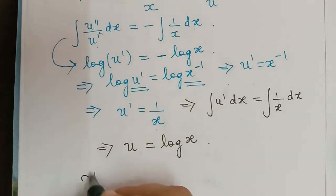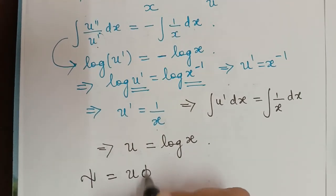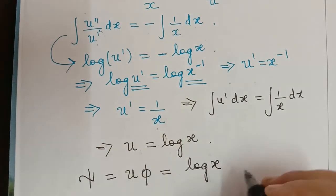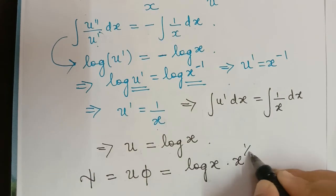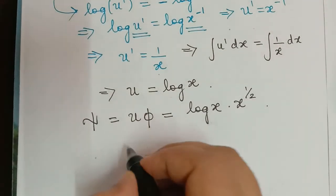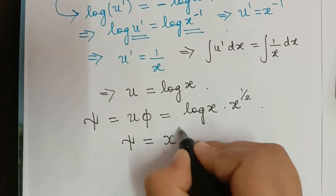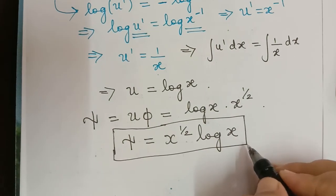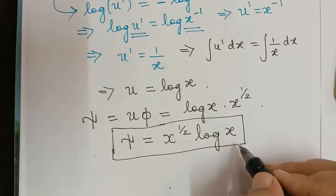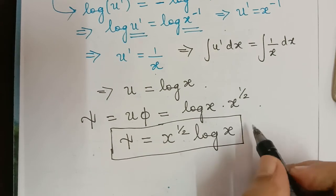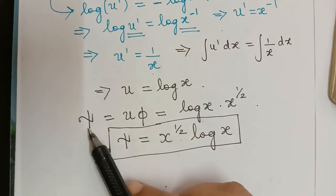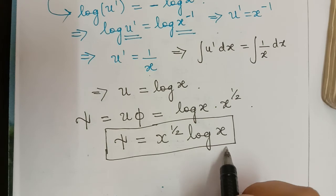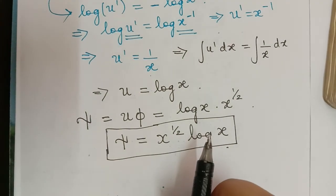Now our second solution is ξ = uφ = log(x) · x^(1/2). Therefore, the final solution is ξ(x) = x^(1/2) · log(x). This demonstrates the method for finding a second solution when one solution is already given. Hope you have understood this problem. Thank you.